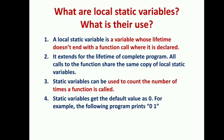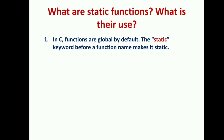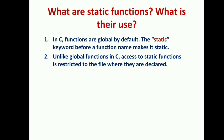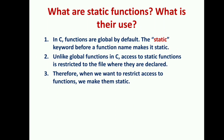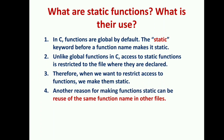What are static functions and what is their use in C? Functions are global by default, but the static keyword before a function name makes it static. Unlike global functions, access to a static function is restricted to the file where it is declared. When we want to restrict access to a function, we make it static. Another reason for making a function static is the ability to reuse the same function name in other files.